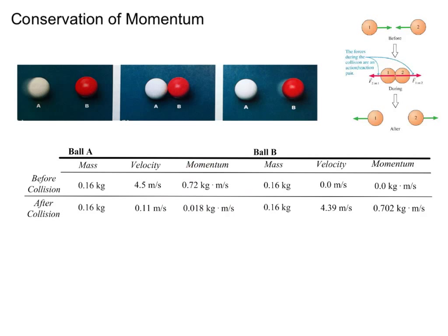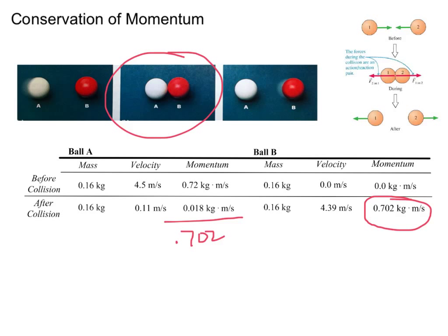After the collision, ball A has a momentum of 0.018 kg·m/s, while ball B has a momentum of 0.702 kg·m/s. This shows us that the momentum that ball A loses, which is 0.702 kg·m/s, is exactly equal to the momentum that ball B gains. When we take this as a whole system — both balls together — the total momentum before the collision is 0.72, and the total momentum after the collision, 0.018 plus 0.702, equals the same 0.72 kg·m/s. The momentum of each ball changes individually, but the total momentum of the two balls together remains the same.